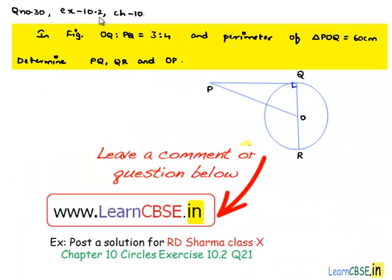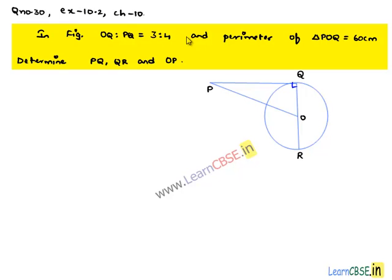Let us discuss question number 30 from Exercise 10.2, Chapter 10. In the figure, given that OQ to PQ is equal to 3 to 4 and perimeter of triangle POQ is equal to 60 centimeters, determine PQ, QR and OP.